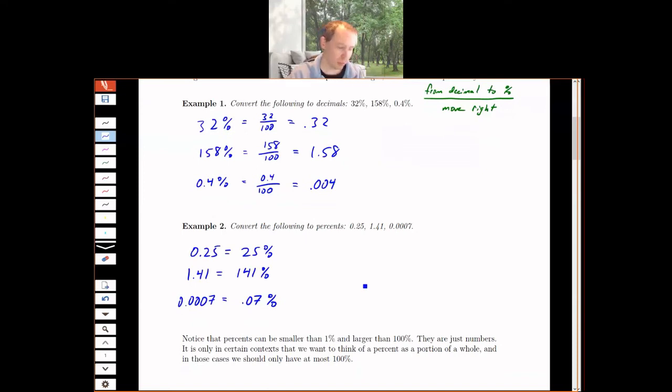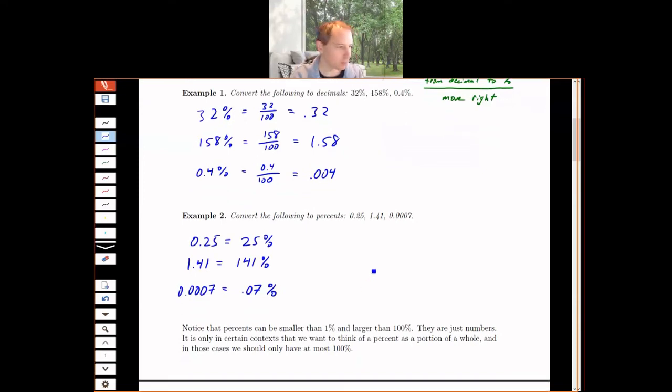Now, some of these percents are smaller than one. That's okay. 0.07 percent is a tiny number, but it exists. Percents can be bigger than 100 percent, that's fine. Percent is just a fraction over 100. There's no rule about fractions that says they have to be between zero and one. We can have improper fractions.